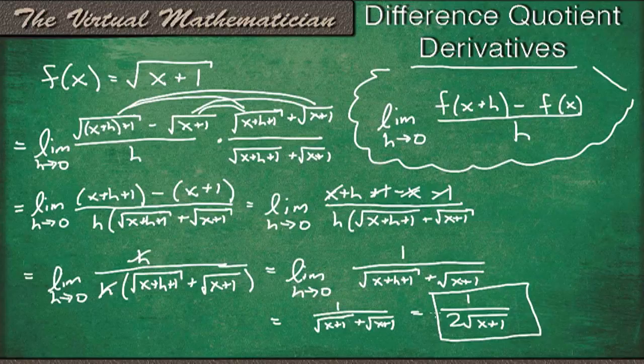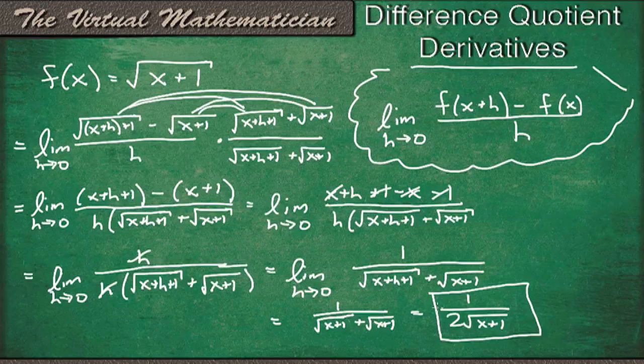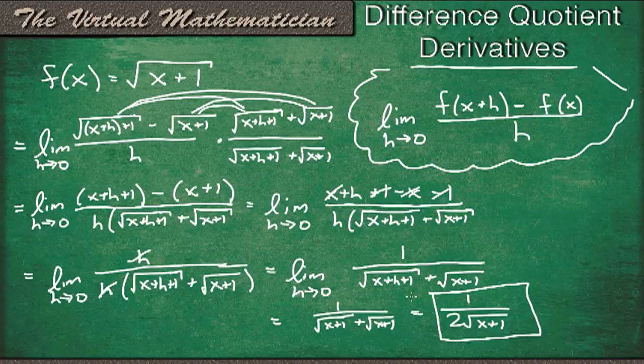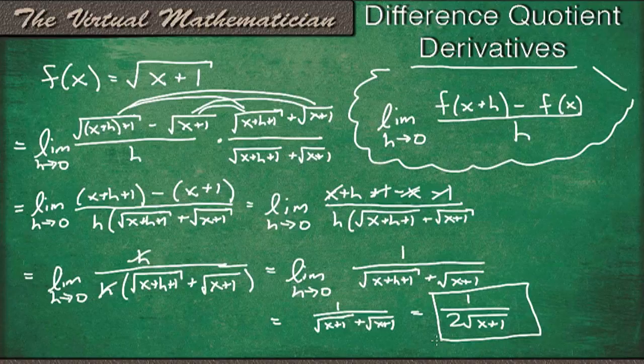So I wanted to show a little bit more of a difficult example using this rule because I feel like with this, if you do a simple example, when you get to a problem involving a square root or something weird, you're not going to know what to do. So you've got to get creative and do things like multiply by the conjugate and stuff like that. So I hope this helped clarify the idea for you. And thanks for watching.